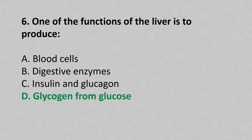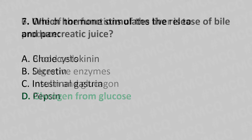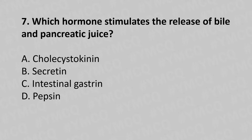Now let's move to question number 7. Which hormones stimulate the release of bile and pancreatic juice? Option A: Cholecystokinin. Option B: Secretin. Option C: Intestinal Gastric. Option D: Pepsin. And the answer is Option A: Cholecystokinin.